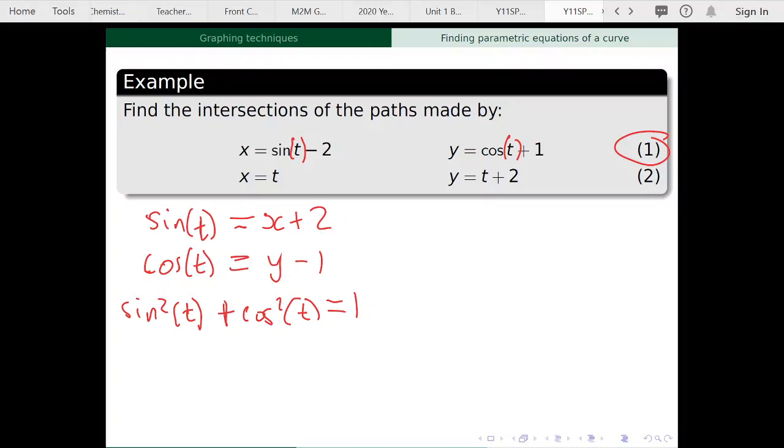And then we just substitute in. So what we've got here, these two equations, they're just sine of t and cos of t. We're going to need to square both sides to get the things that go in this equation. So for sine, it's x plus 2 all squared plus y minus 1 all squared equals 1. So now we have a Cartesian equation from the first set of parametric equations.